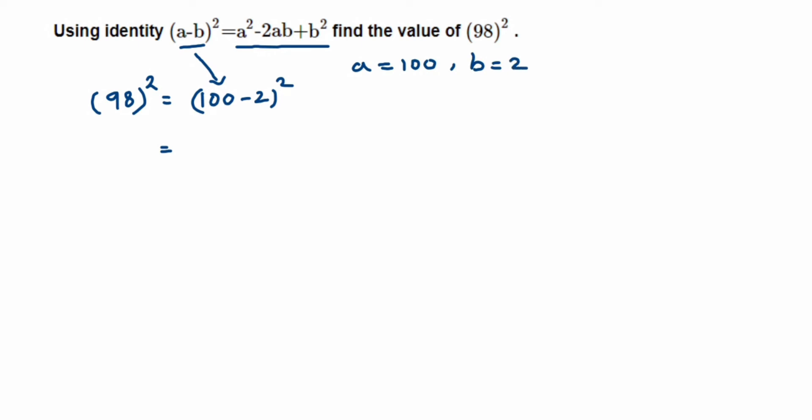By doing that we'll get 100² - 2ab, so it's 2 × a value is 100 and then b value is 2, plus b². B value is 2 again, so we'll get 2². Open the brackets.